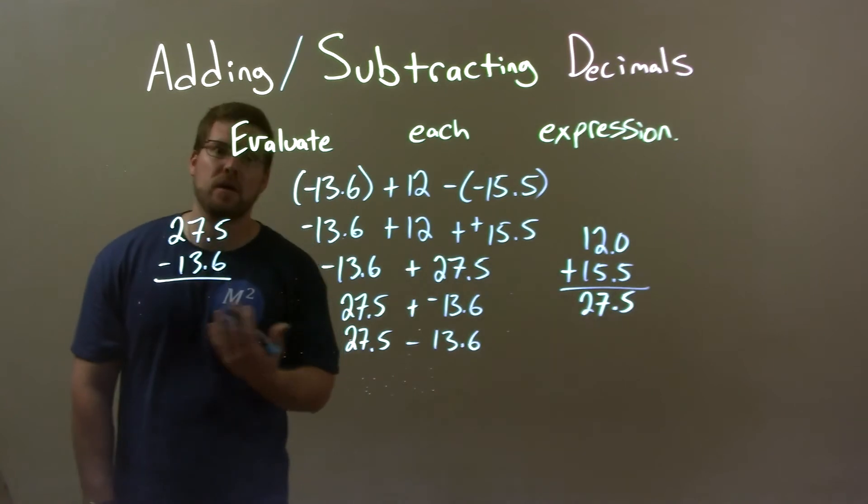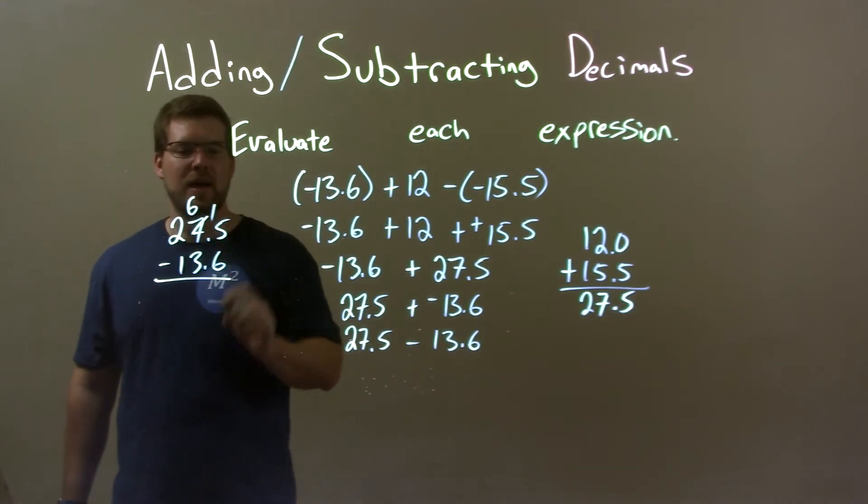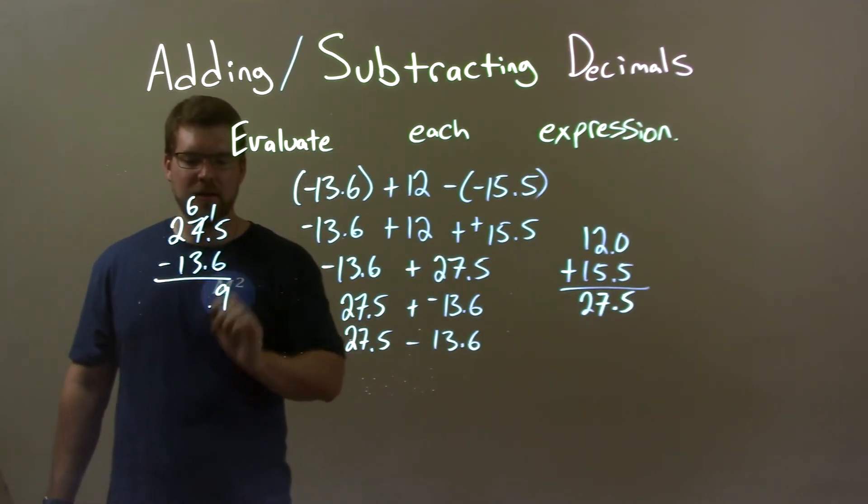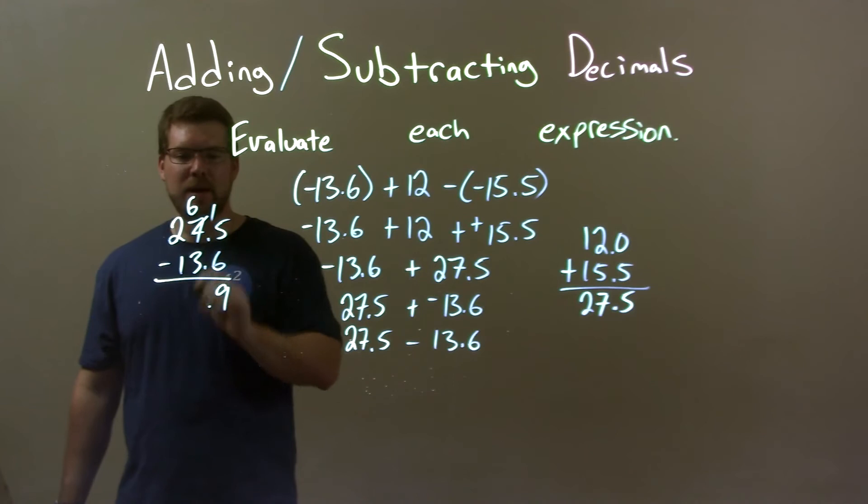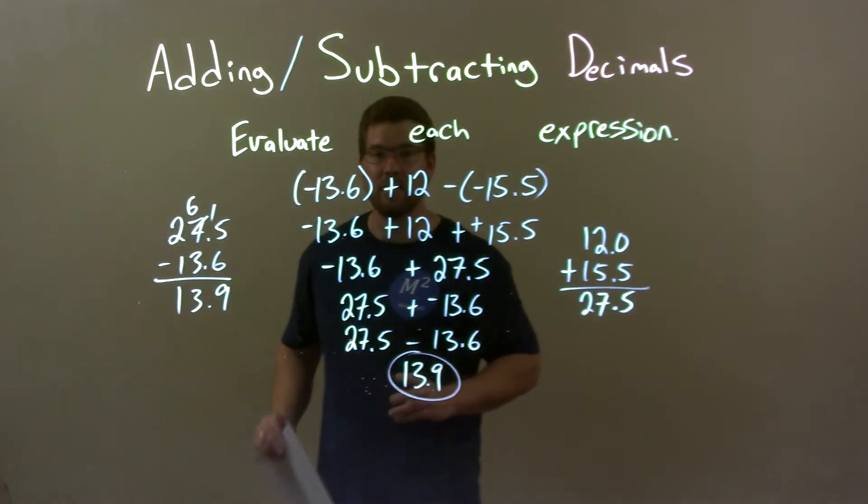Five minus six. I can't do that, so get one from the seven. That becomes a six. Add one. Fifteen minus six is nine. Decimal place stays there. Six minus three is three. Two minus one is one. Thirteen point nine is my final answer.